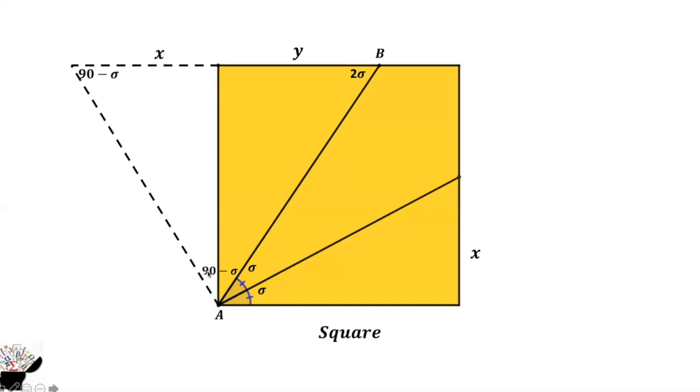So from here, this angle that is 90 minus theta has a length of x plus y. If this angle is 90 minus theta, then the length of AB is automatically x plus y. So AB equals x plus y.